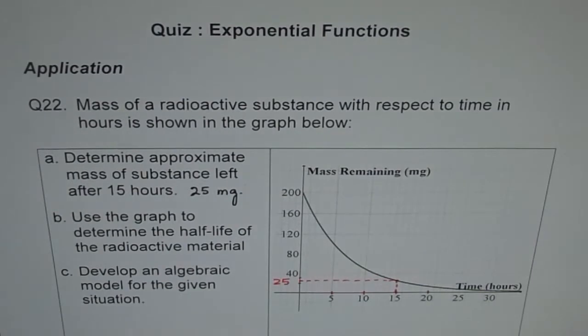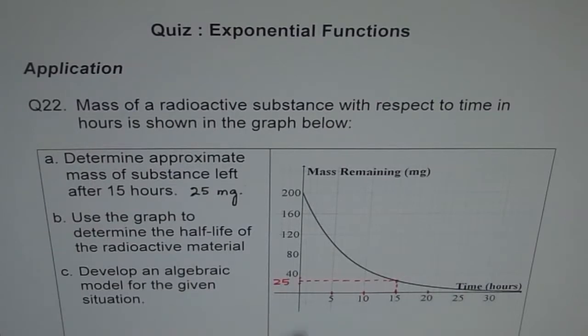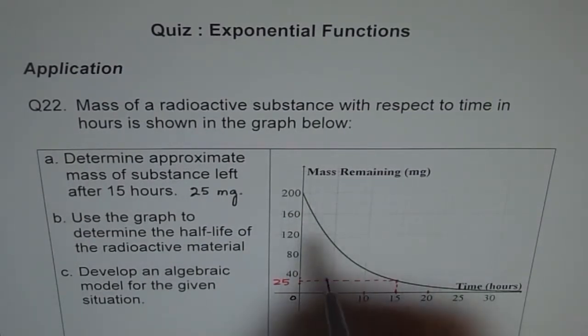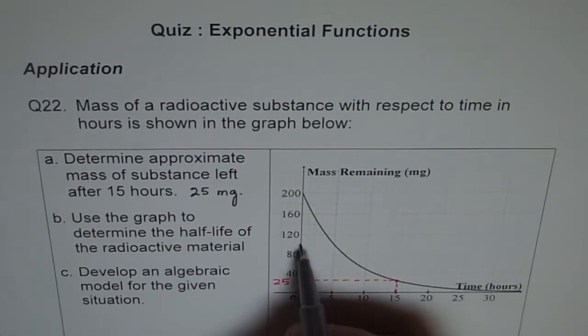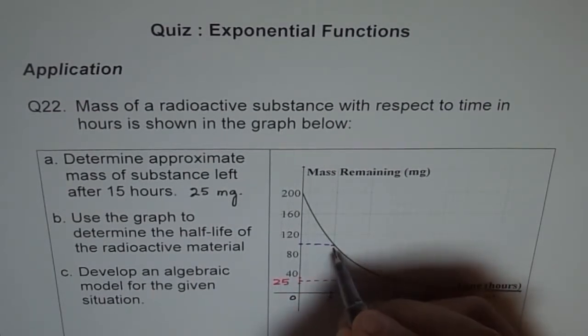Now the next part is use the graph to determine half-life of the radioactive material. We see at t equals 0 the mass was 200, so half-life is when the mass remaining is 100. This is 80, and so this is 100.